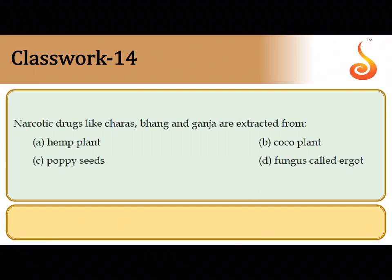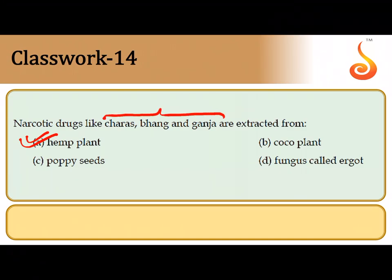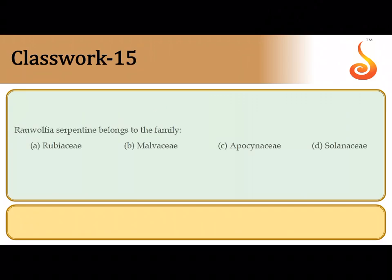The fourteenth question: narcotic drugs like charas, bhang, and ganja are extracted from the hemp plant. The Indian hemp plant, Cannabis sativa, is a source of all these drugs. They are collectively referred to as cannabinoids and have hallucinogenic properties. So option A is the correct answer.